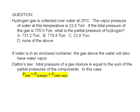We are being asked for the partial pressure of hydrogen, so we simply rearrange this equation. To get the partial pressure of hydrogen, we subtract the partial pressure of water vapor from the total pressure.